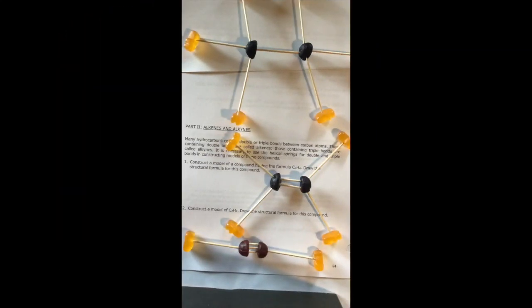For part two, you'll be asked to create organic compounds with double and triple bonds. The procedure says to use springs. In place of springs we're going to use our toothpicks, but to create a double bond you're going to take your single bond, a single toothpick, and break it in half, which is what I've done in the second compound here.